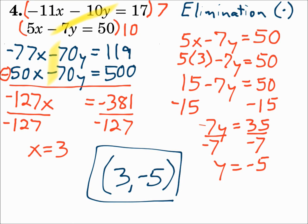Remember, when deciding what method to use: it's best not to use graphing. If a variable has a coefficient of 1, you can use substitution. If everything's lined up, you can eliminate. If a variable has matching coefficients and the signs are the same, eliminate with subtraction. If the signs are different, eliminate with addition. But if the coefficients don't match, you'll have to eliminate with multiplication.